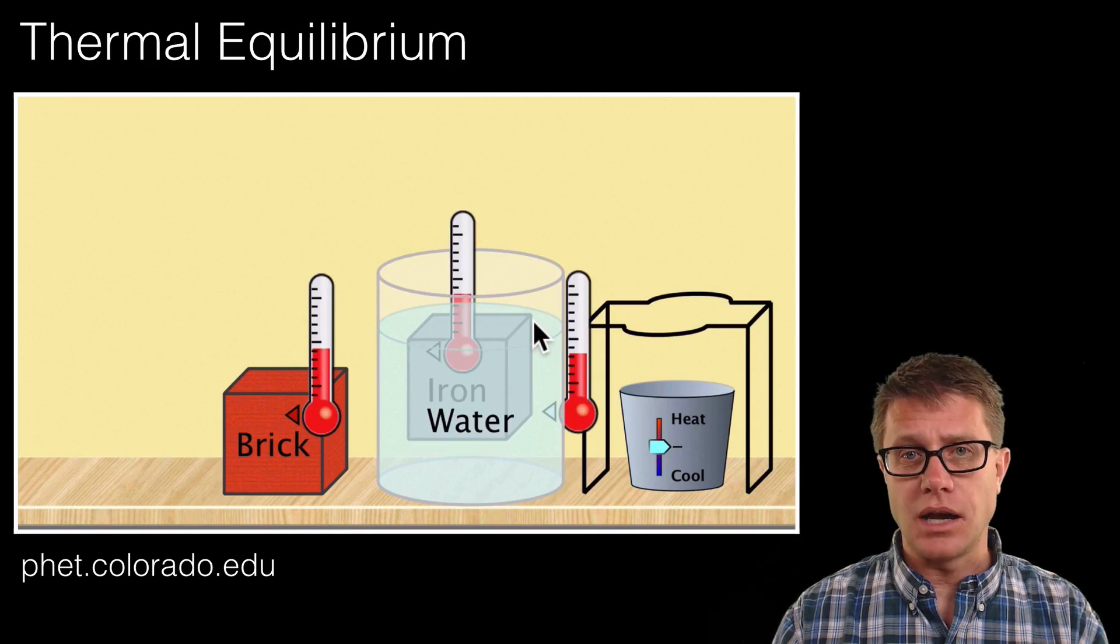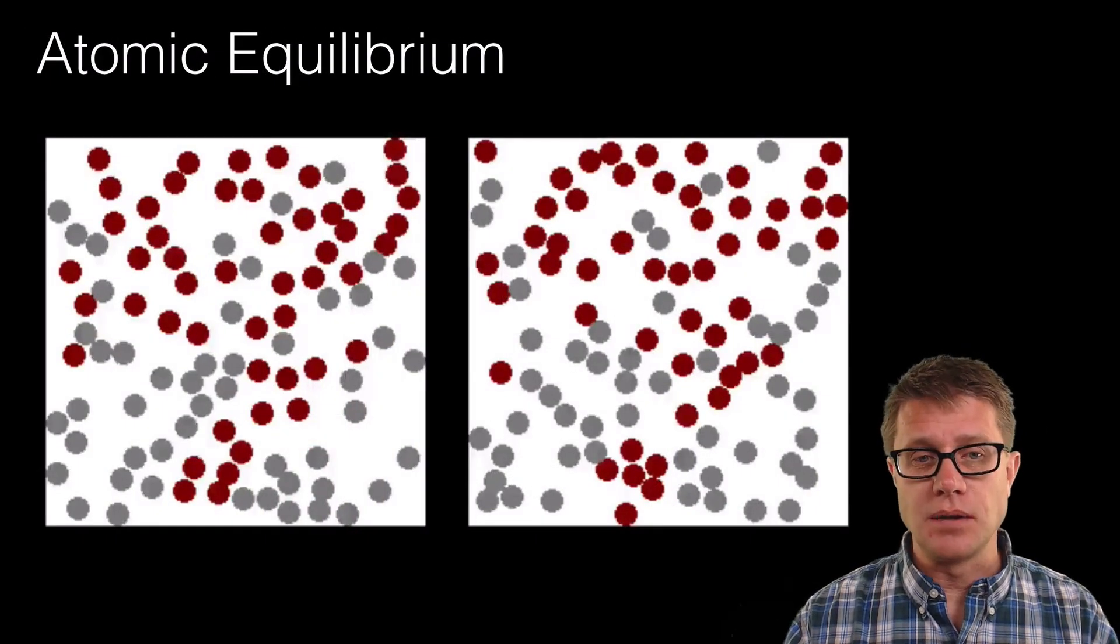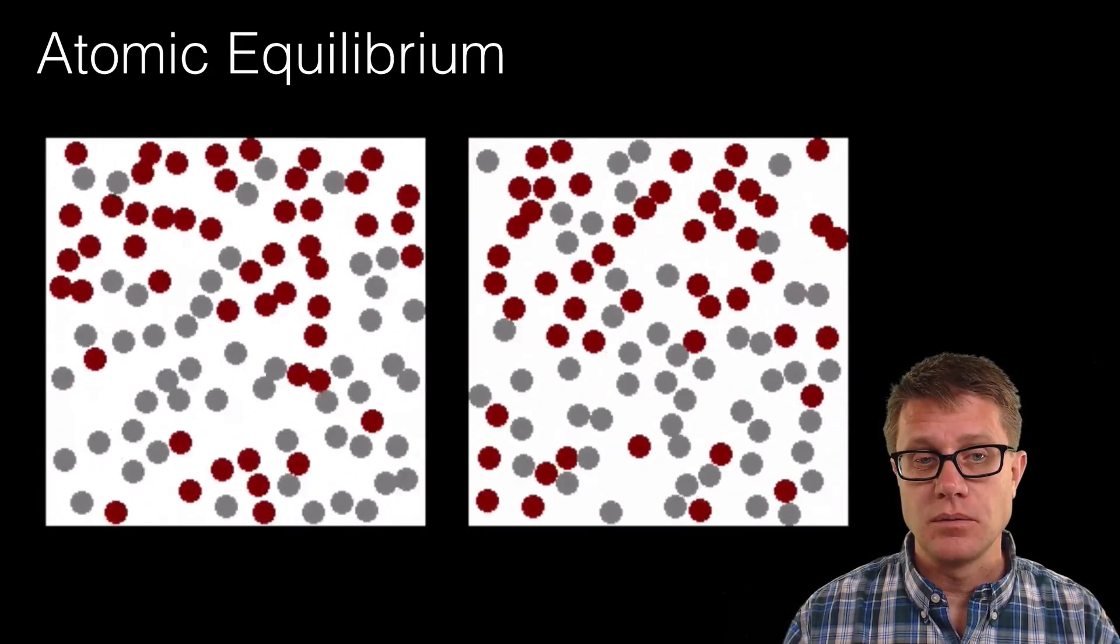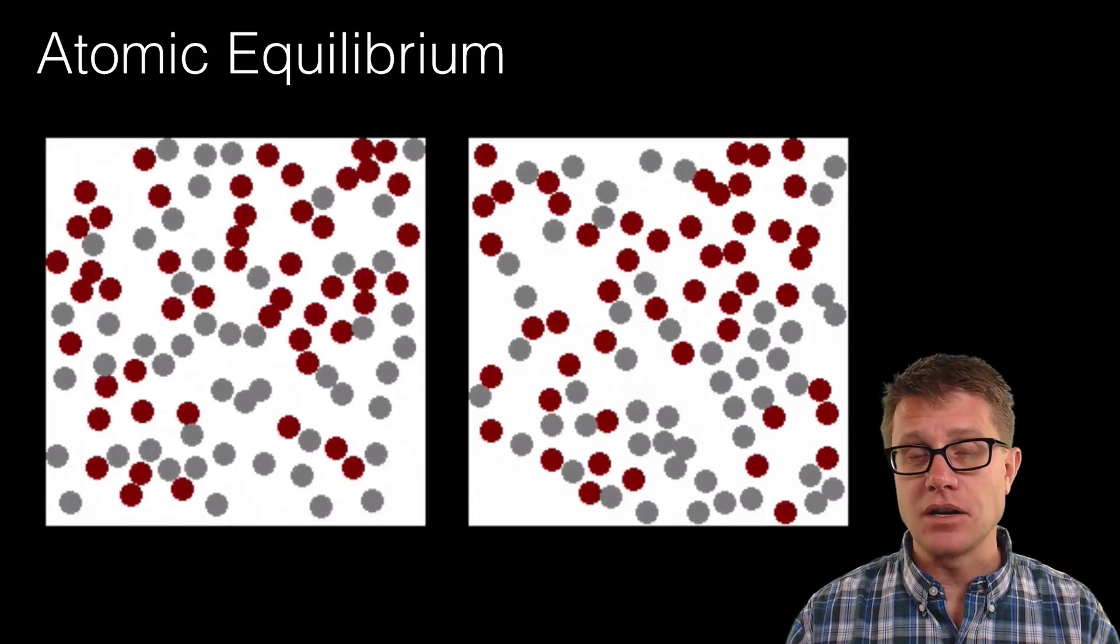Now this is macroscopically looking at it. What happens microscopically? Well, if you look at it, let's say we have these two objects, the one on the left and the one on the right. Which one has a higher temperature? It is going to be the one on the left. You can see the molecules are going faster. They have higher kinetic energy.